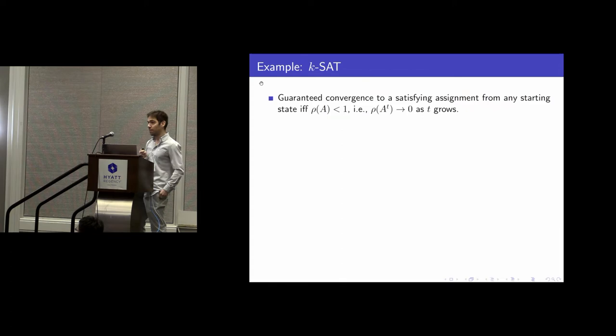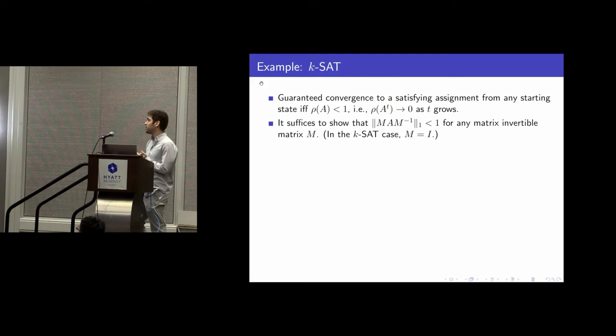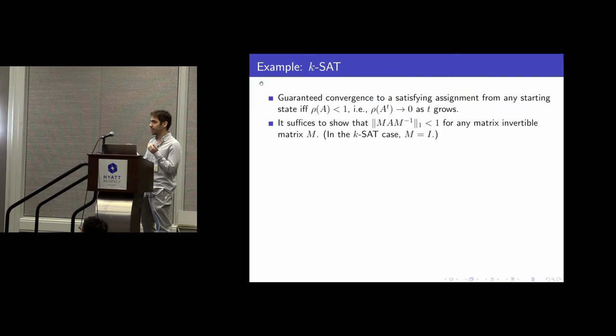The first step is that instead of bounding the spectral radius directly, we bound the 1-norm of A, possibly after a change of basis. This is because a change of basis retains the spectral radius, and any operator norm upper-bounds the spectral radius. In the case of K-SAT, things are simple — we don't need a change of basis, it will just be the identity.